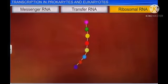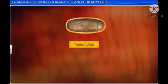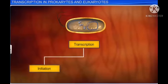Transcription, the first process in protein synthesis, occurs in three stages: initiation, chain elongation, and termination.